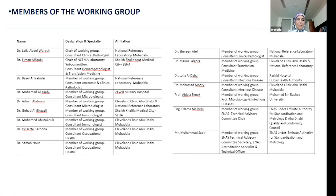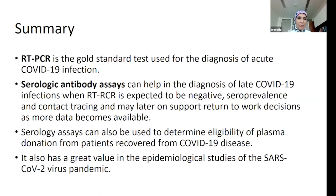In closing, the RT-PCR is the core standard used for the diagnosis of acute infection. Antibody assays can help in late COVID-19 infection when RT-PCR is expected to be negative, in seroprevalence studies and contact tracing. They can also help determine eligibility for convalescent plasma donation for patients who recovered from COVID-19 and are of great value in immunological studies of the COVID pandemic.